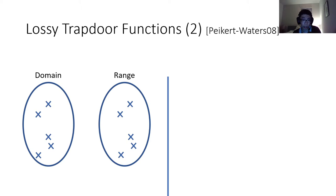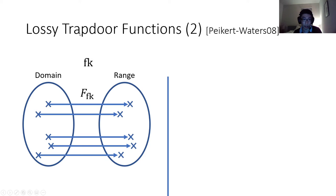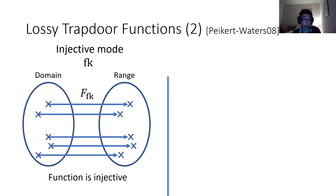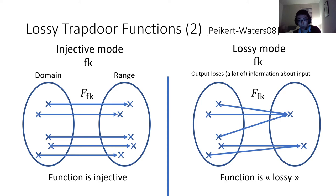So what's a lossy trapdoor function? It's a function that features a domain and a range, indexed by a function key fk. There will be a way to sample function keys in the injective mode, so that the resulting function will be injective. And there will also be an alternate way of generating function keys called lossy mode, such that the function is lossy — meaning that the function, after being applied, should lose information-theoretically some information about its input.